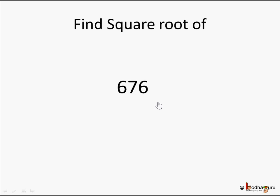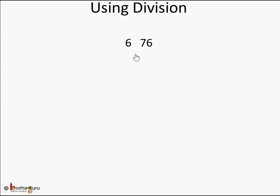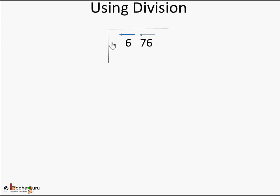Let's take another example. We need to find the square root of 676. Using the division method, we write 676 next to the division sign. Starting from the ones place, we pair the digits: '76' becomes one pair and '6' is the remaining digit. We draw the lines just like before.